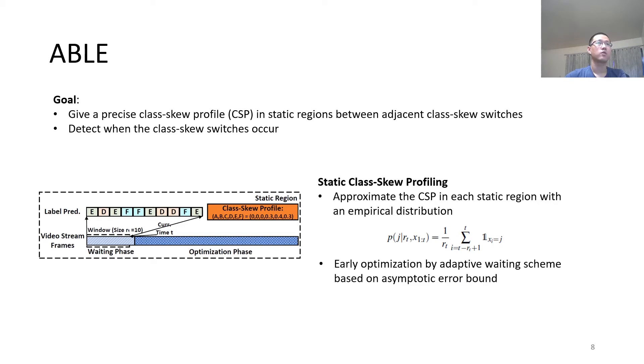To this end, we propose early optimization by selecting a minimal number of frames for balancing the class skew profile quality and the number of predictions in use. Please refer to our paper for mathematical details.